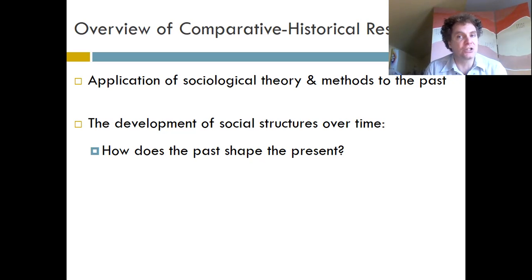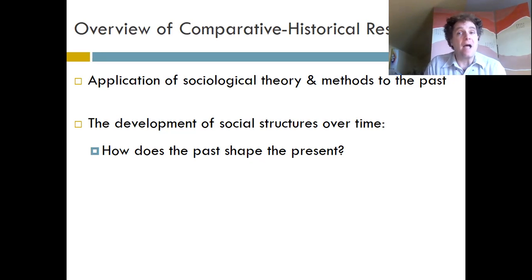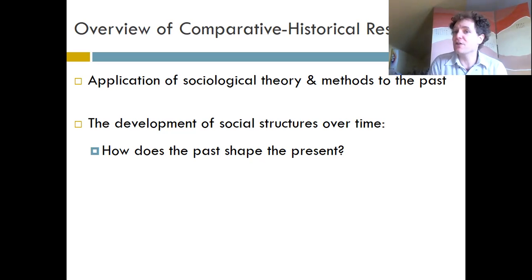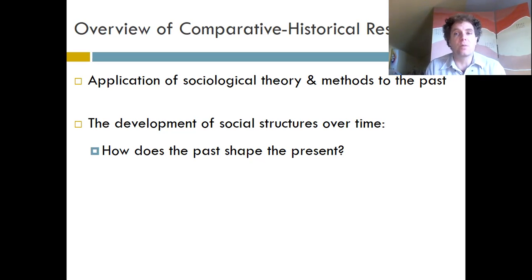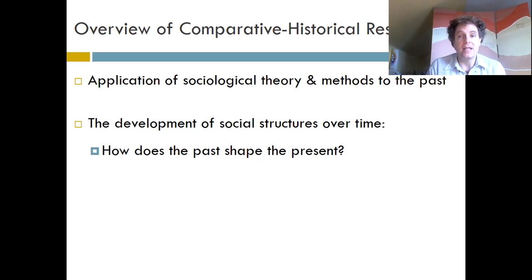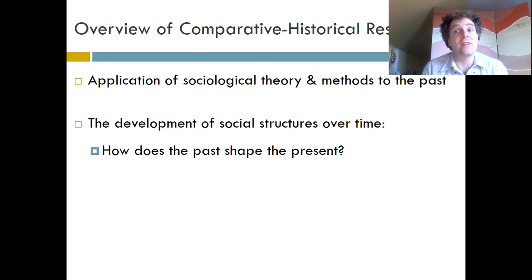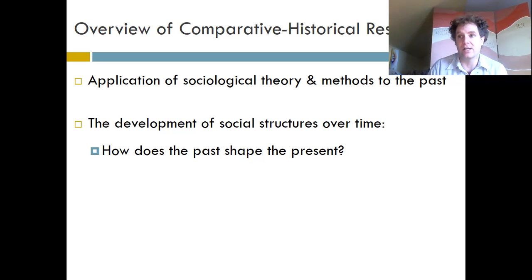Comparative historical research tends to see the world as very fluid rather than as permanent or static. Society changes over time and is in constant movement. That movement might be very slow — so slow that it might be imperceptible — but if you look at society over hundreds or even thousands of years, you can see change in these structures. So comparative historical research is not just interested in the past; it's interested in the present. The past explains the present — by understanding history, we can understand our contemporary world. The central question is: how does the past shape the present?